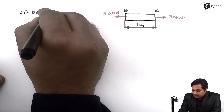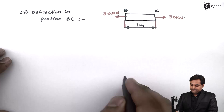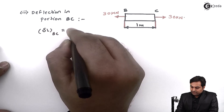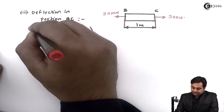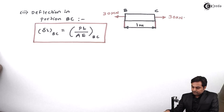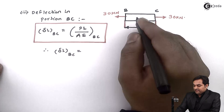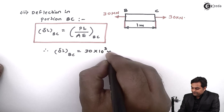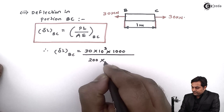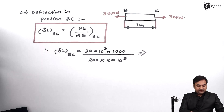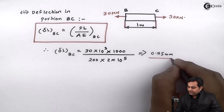Deflection in portion BC is given by delta L = PL / AE. The load of 30 kN is tensile so it is positive: P = 30 into 10 raised to 3 N, length = 1000 mm, area = 200 mm square, E = 2 into 10 raised to 5. Therefore deflection in BC equals 0.75 mm, and since it is positive there is an increase in length.